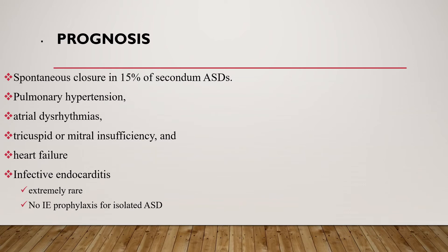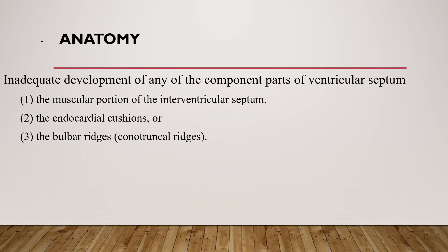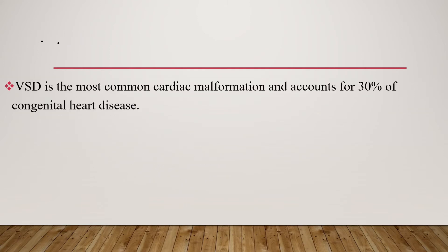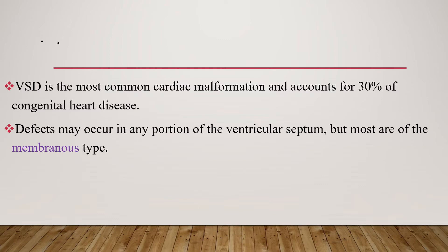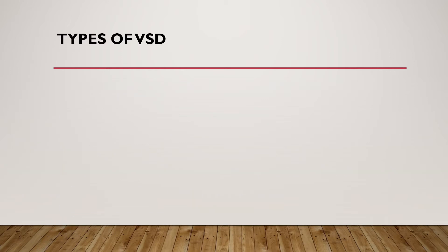The second type of shunt lesion is ventricular septal defect. Anatomically, VSD is due to inadequate development of any of the component parts of the ventricular septum — the muscular portion, the endocardial cushion, or the conus cartilage — allowing communication between the two ventricles. VSD is the most common cardiac malformation, accounting for around 30 percent of congenital heart disease. Most defects are of the membranous type, and supracristal VSDs are found just beneath the pulmonary valve and may impact the aortic sinus, causing aortic insufficiency.